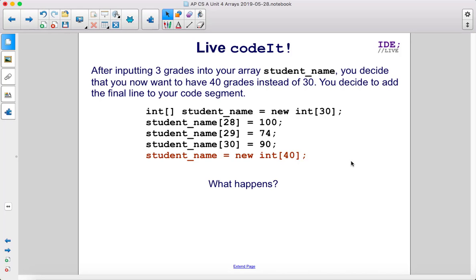After inputting three grades into your array student_name, you decide that you now want to have 40 grades instead of 30. You decide to add the final line to your code segment. What happens?